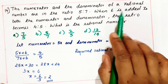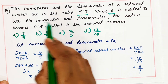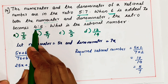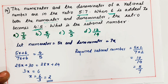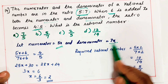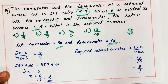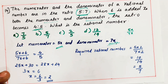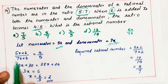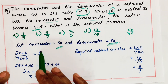Next: the numerator and denominator of a rational number are in the ratio 5 is to 7. When 6 is added to both numerator and denominator, the ratio becomes 4 is to 5. What is the rational number? Since numerator and denominator are in ratio 5:7, I am taking numerator as 5x and denominator as 7x. They told to add 6, so we get 5x plus 6 over 7x plus 6, and this equals 4 by 5.